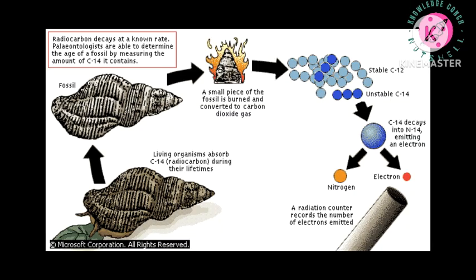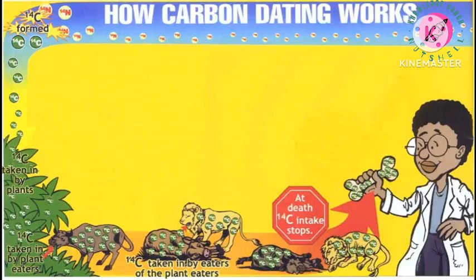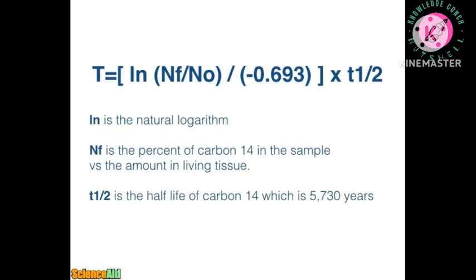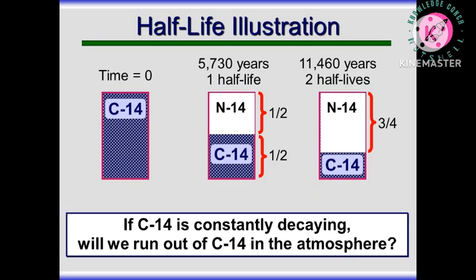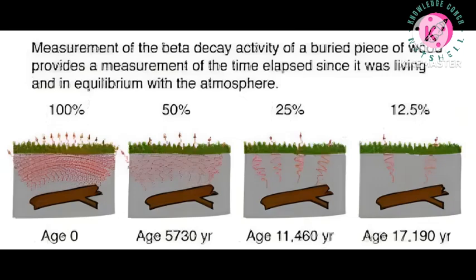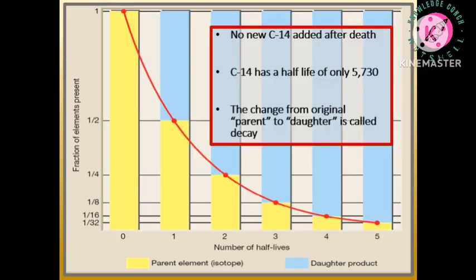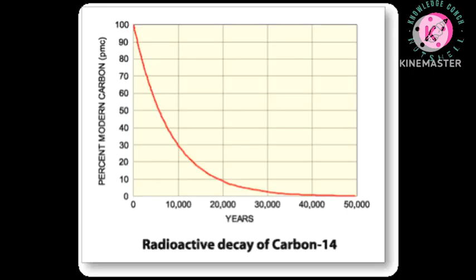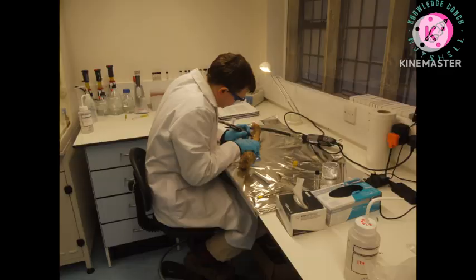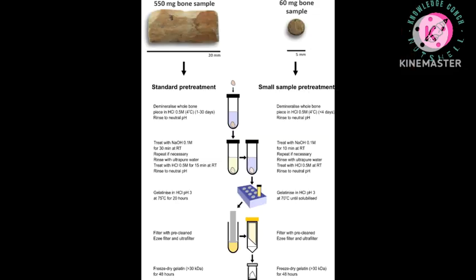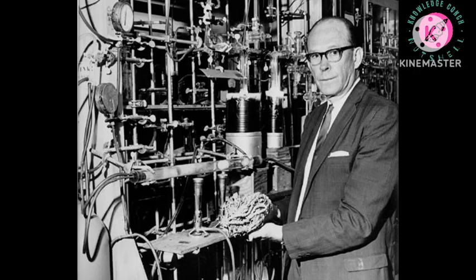Measuring the proportion of C-14 in a sample from a dead plant or animal, such as a piece of wood or a fragment of bone, provides information that can be used to calculate when the animal or plant died. The older a sample is, the less C-14 there is to be detected. The half-life of C-14 is about 5,730 years. The oldest dates that can be reliably measured by this process date to approximately 50,000 years ago, by which point about 99.8% of the C-14 will have decayed, although special preparation methods occasionally make an accurate analysis of older samples possible. In 1960, Libby received the Nobel Prize in Chemistry for his work.